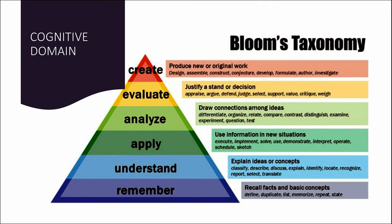Bloom's taxonomy for level of learning is divided into three types based on the domains. This is a pyramid where the base stands at remembering facts — recalling facts and basic concepts. The ability to define concepts, duplicate or repeat what is in the subject, and list out, memorize, repeat, and state the concepts comes under the base of this Bloom's taxonomy.